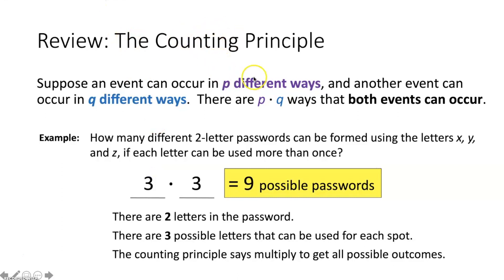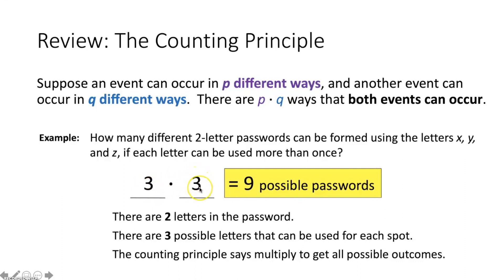Let's review the counting principle: if one event can occur in p ways and another in q ways, the total number of ways both events can occur is p times q. For example, creating a two-letter password using only x, y, and z with repetition allowed: three choices for the first letter times three for the second gives nine possible two-letter passwords.